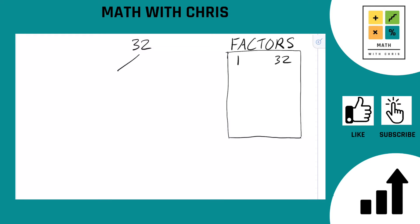Now we're going to branch out and see what two numbers can multiply together to give us 32. We've got a couple of different options — you can go with any combination you can come up with. I'm going to go with 2 times 16. 2 is a prime number, so circle and done. 16 is not, so we've got some work to do on 16.